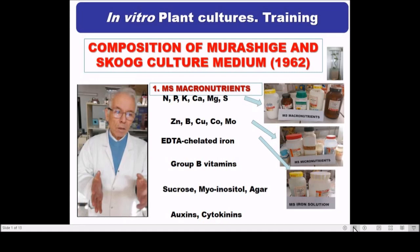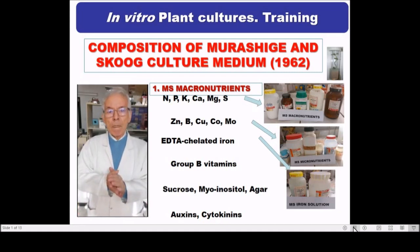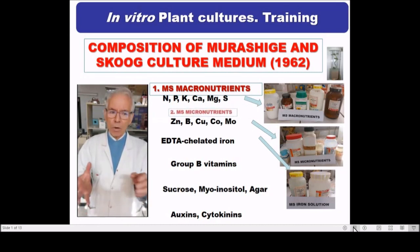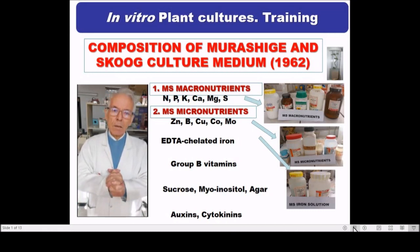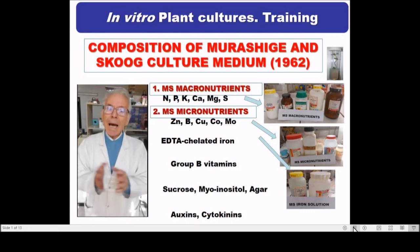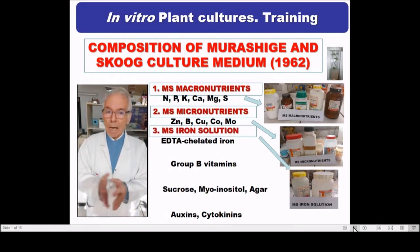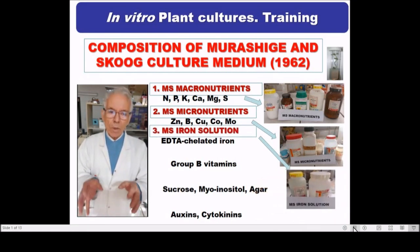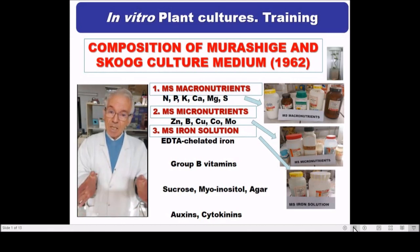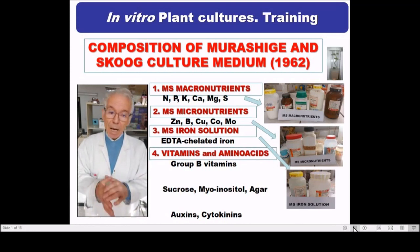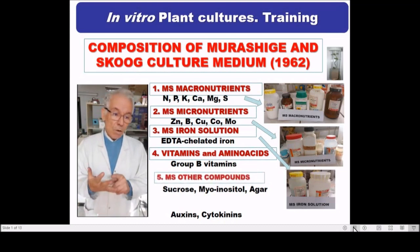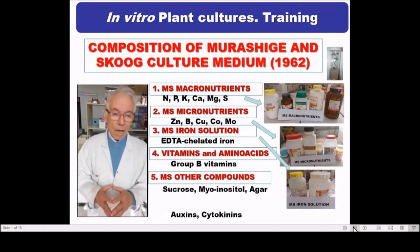Calcium, magnesium and sulfur. Also, you need micronutrients, or micro elements, that are needed in small quantities, such as zinc, boron, copper, cobalt, and molybdenum. Third, you need iron, which will be chelated to EDTA. You also need vitamins, amino acids like glycine, as well as sucrose, myo-inositol, and agar as a gelling agent.